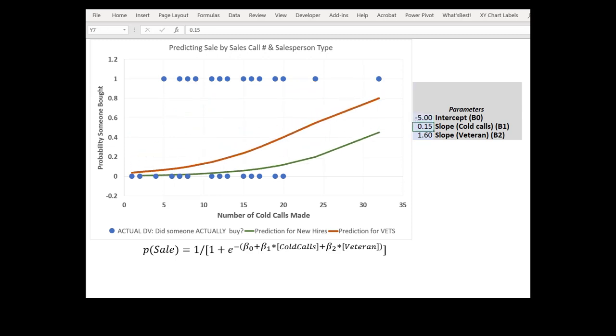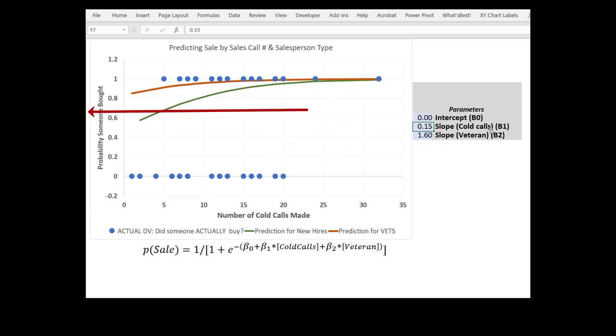I'll make it larger negative. Negative 5. All it did was actually take the shape of the curves and shifted them entirely to the right. I set it to 0. It moves the curve way far over.